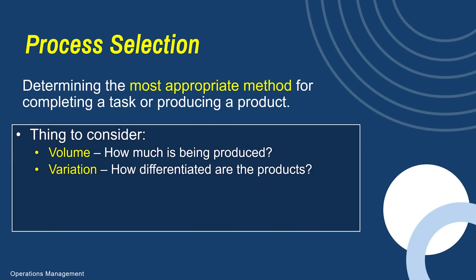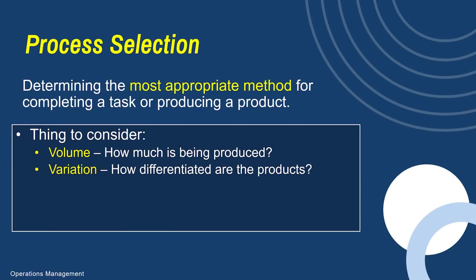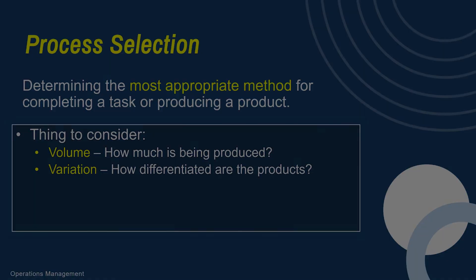Two things you want to consider when it comes to process selection: volume — how much of it are you producing? Are you producing in high volume, moderate, or low volume? And then variety — what is the degree of variation of your products? How differentiated are the products you're producing? Are they very unique or are they consistently the same? That's going to determine what process selection you should choose.